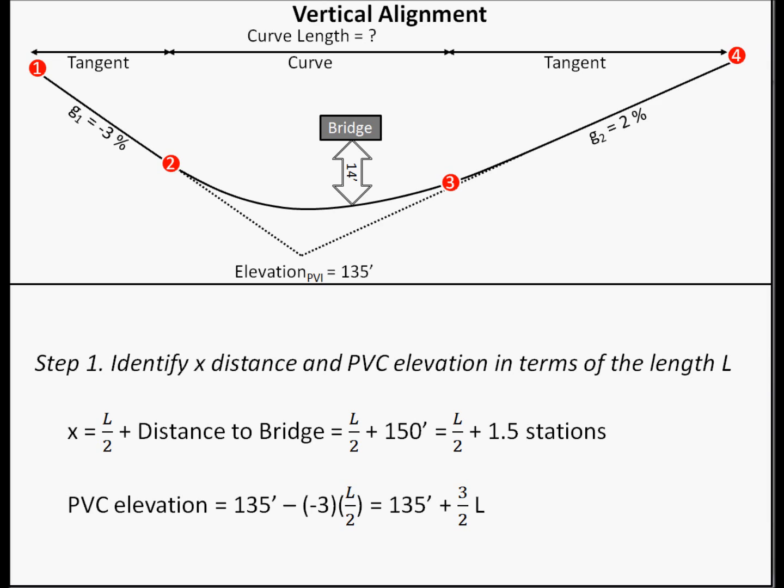We will begin this process by identifying the x distance and the PVC elevation in terms of the length L. A clearance of 14 feet is needed between the bridge and the roadway beneath it. We have an entrance grade of negative 3% and an exit grade of 2%, as well as a PVI elevation of 135 feet.